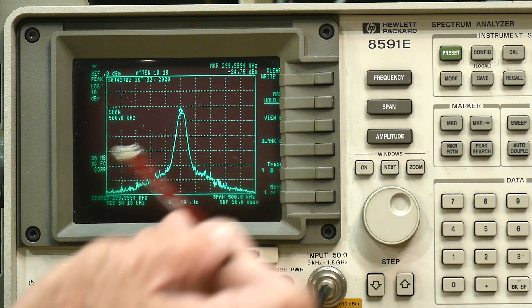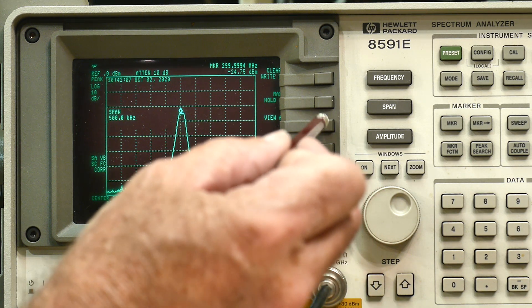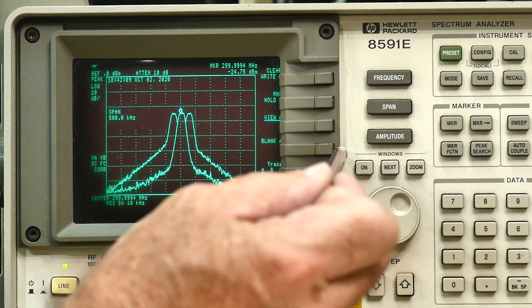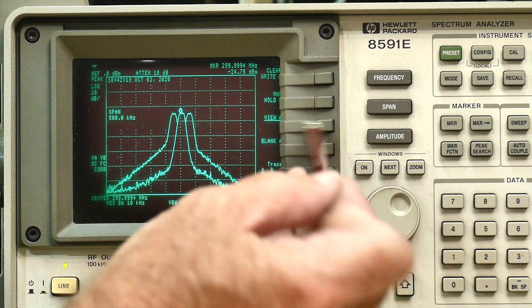We can do the hold feature max hold on B, so it builds that up. I will say view B, we can go back to A, say view A, so there's both of them right. We can look at the two - that's the narrow, that's the wide.